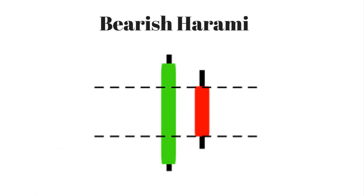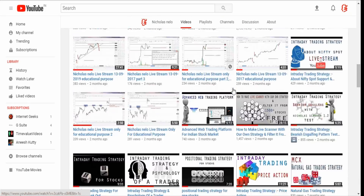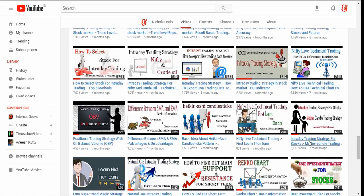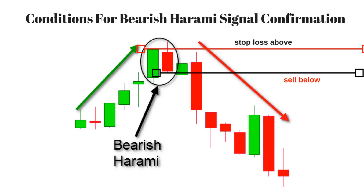Bearish harami: this pattern consists of a large bullish candle and a small bearish candle that is completely inside the range of the bullish candle. It's also called the mother-baby pattern — the bullish candlestick is the mother and the bearish candlestick is the baby. A separate video about the mother candlestick trading strategy for intraday is available on the website's video list.